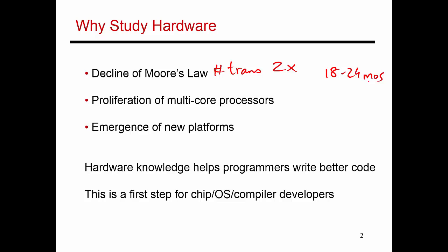This decline is because of the limitations being imposed by physics. As a result, we are not going to see automatic impressive improvements in system performance every few months or every year. So as a programmer, if you want your application's performance to improve every year, this is something that you may have to do yourself.